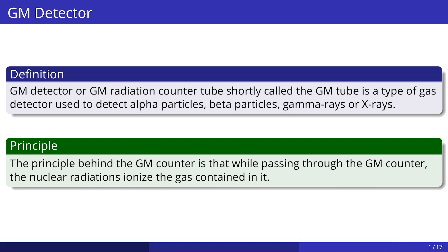A GM detector, or GM radiation counter tube — shortly called the GM tube — is a type of gas detector used to detect alpha particles, beta particles, gamma rays, or X-rays. The principle behind the GM counter is that, while passing through the GM counter, the nuclear radiations ionize the gas contained in it.